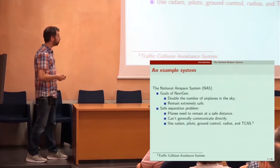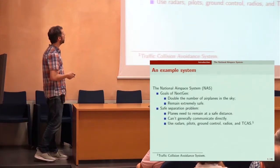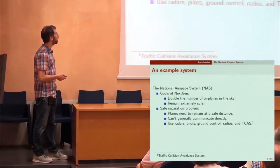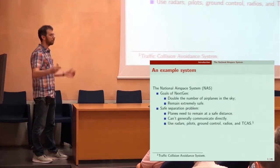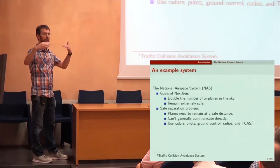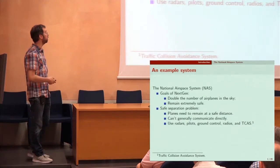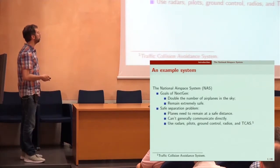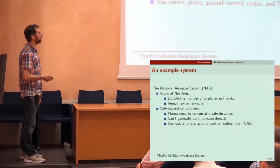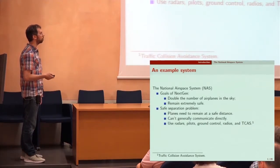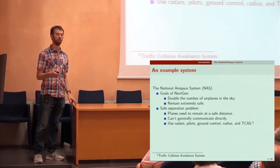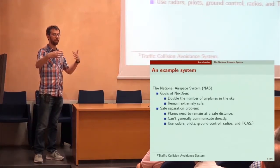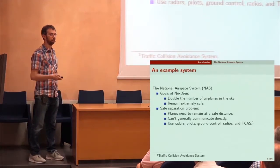The safe separation problem is that planes need to remain at a safe distance from each other but they can't communicate directly. So they use radars, pilots, ground control, radios, TCAS — these are all various systems behaving in various ways trying to keep planes from getting too close.